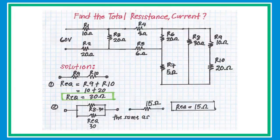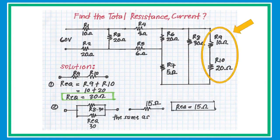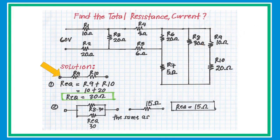The next example is more complex. By collapsing and redrawing the circuit step by step, we can solve it. Starting with R9 and R10, which are connected in series: R_equivalent equals R9 plus R10. Substituting the values gives an equivalent resistance of 30 ohms.